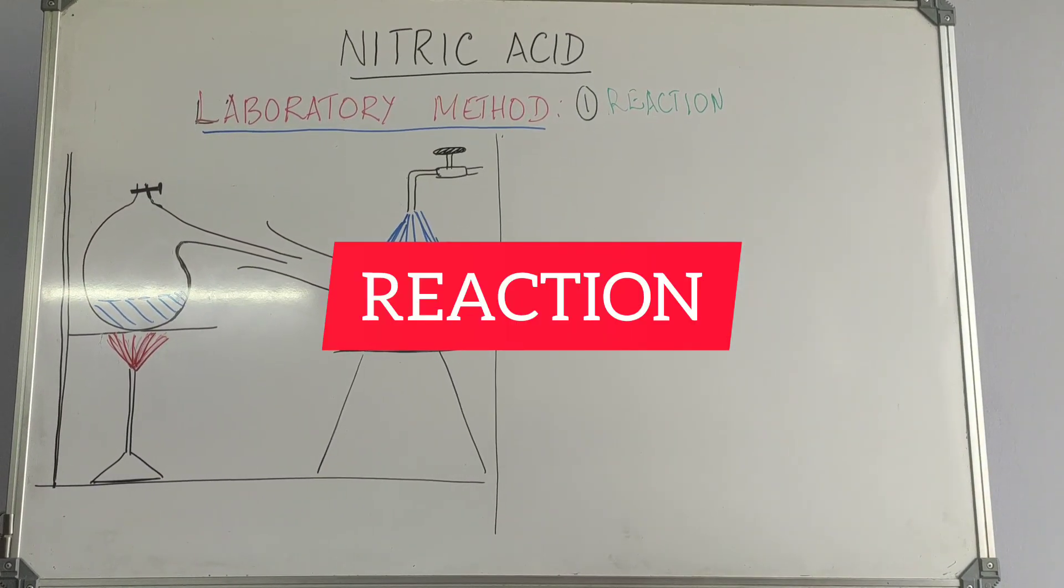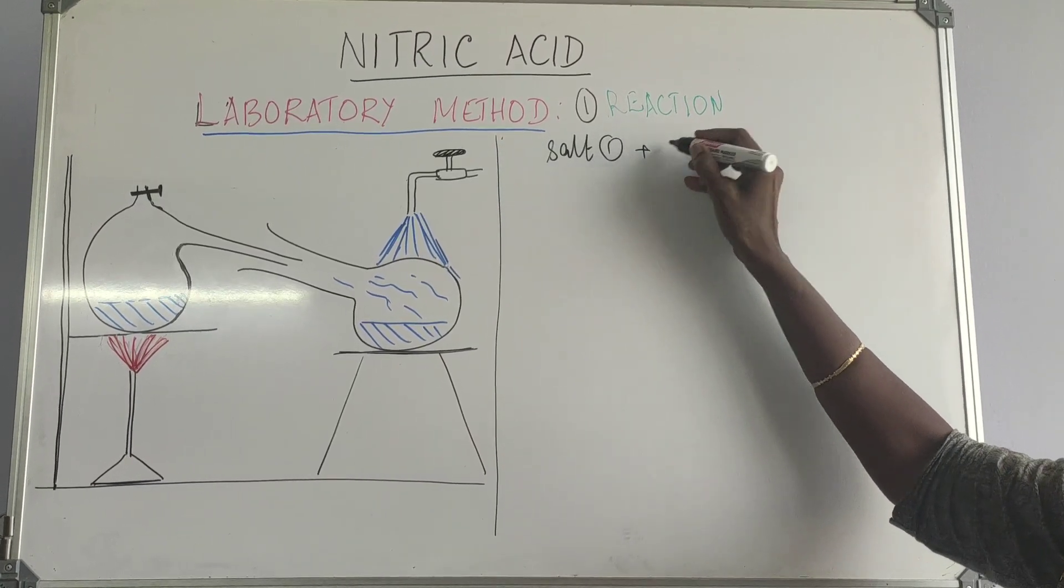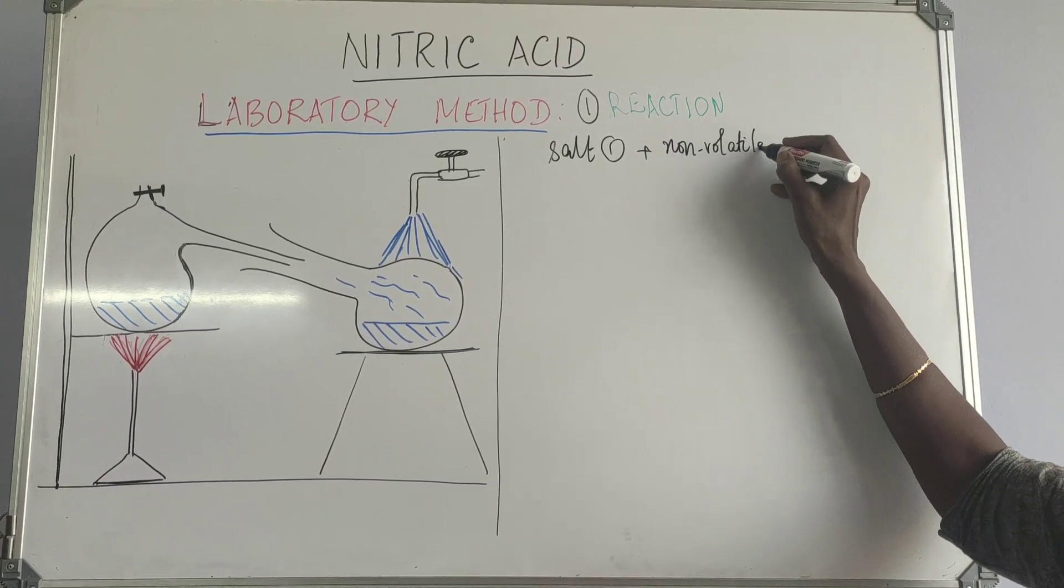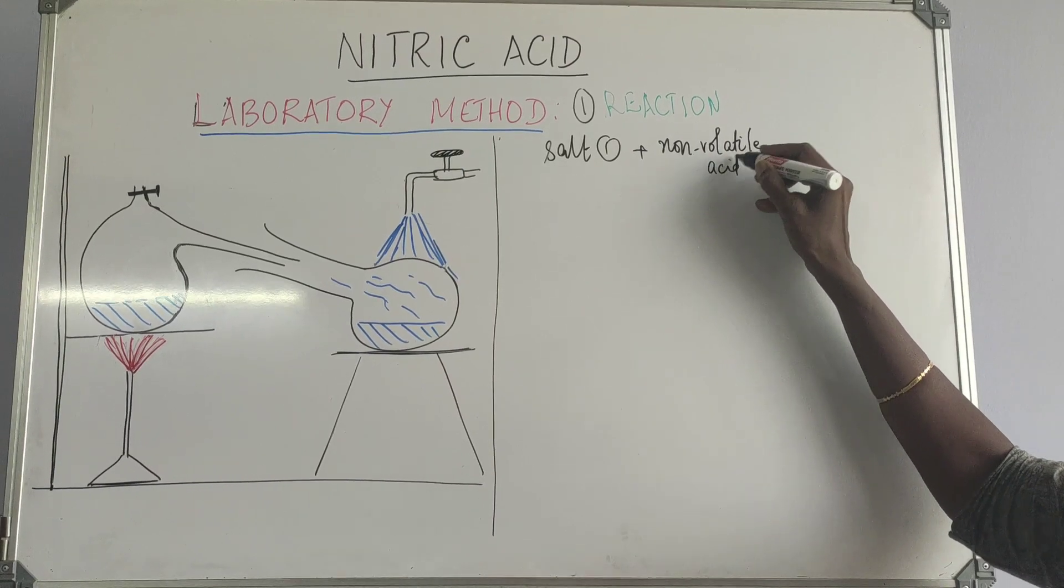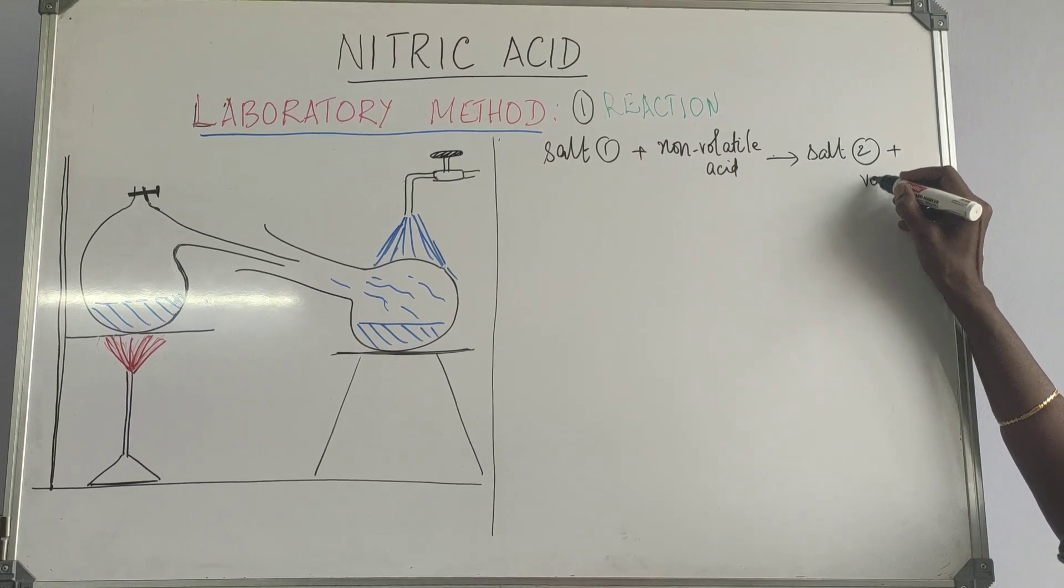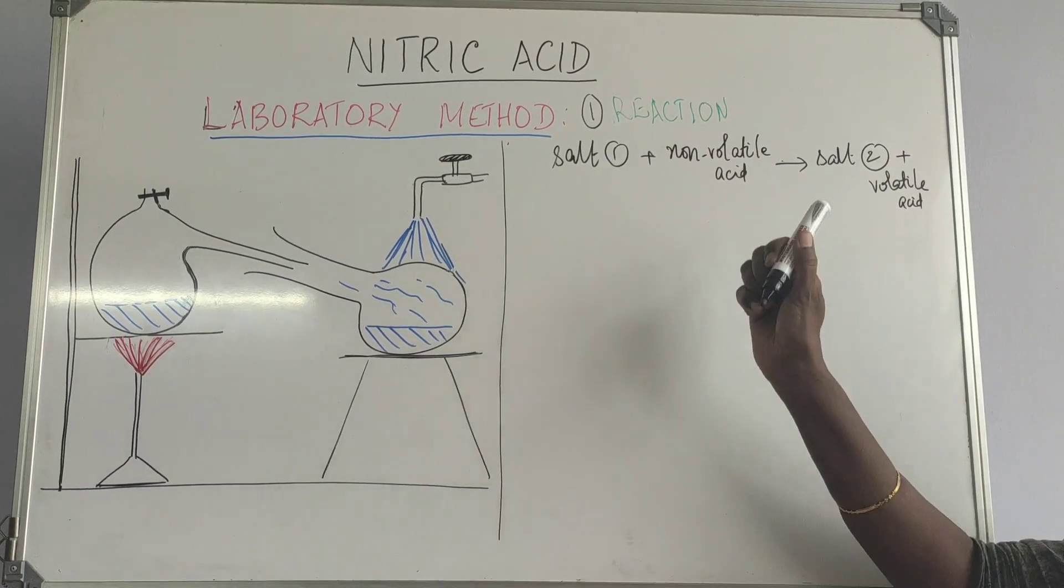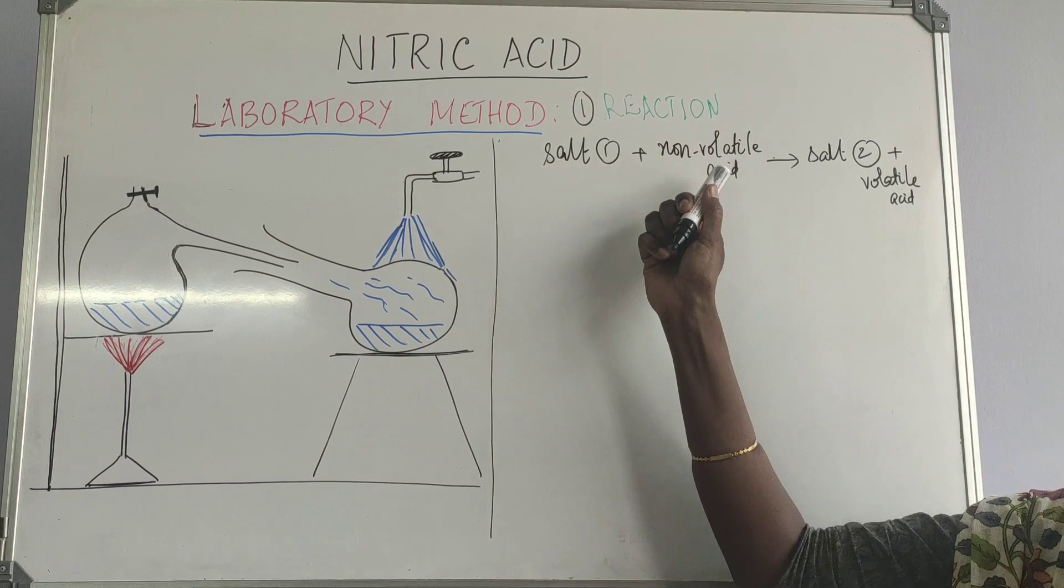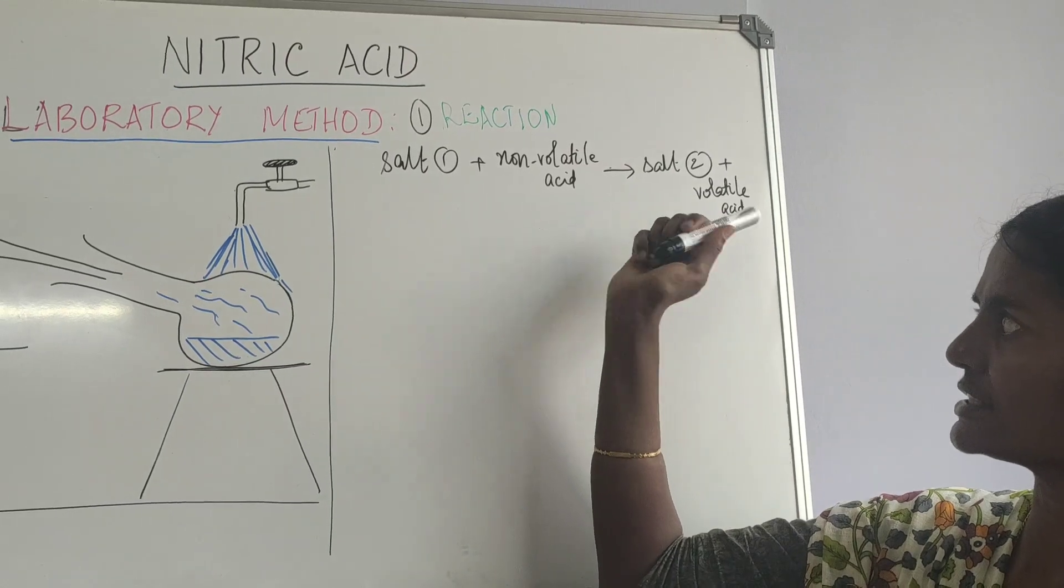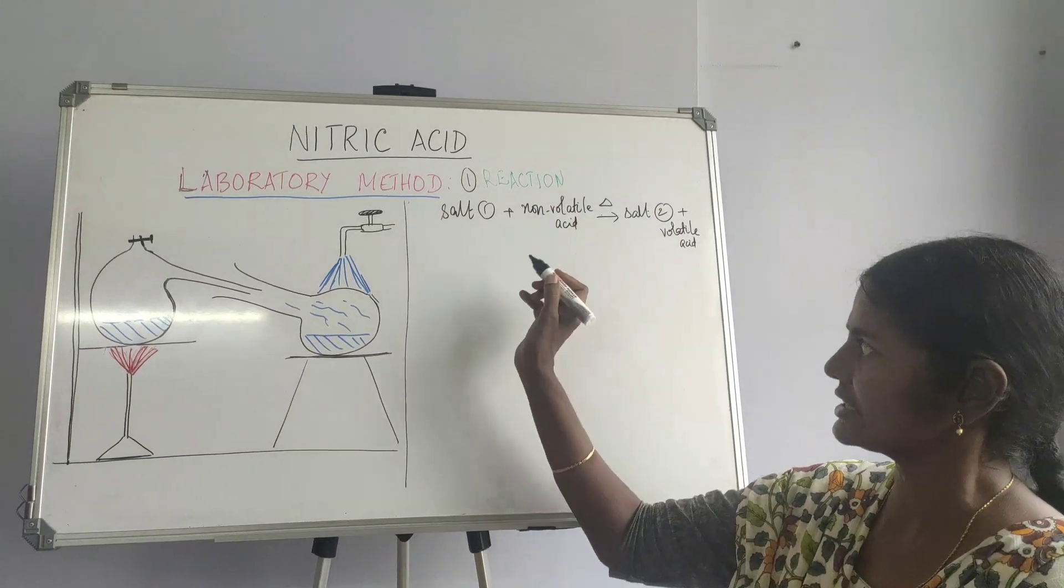What is the reaction about? Take one salt, like salt 1, plus a non-volatile or least volatile acid. So what happens? This non-volatile or least volatile or less volatile acid displaces a volatile acid from its salt. And this is heated. So that is the reaction.